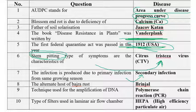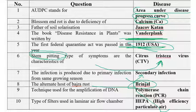The alternate host of bajra rust is brinjal. The next question: the technique used for amplification of DNA is the Polymerase Chain Reaction (PCR). PCR was discovered by Kary Mullis in the year 1983. PCR is otherwise called a thermocycler because high-temperature thermal reactions occur inside it.